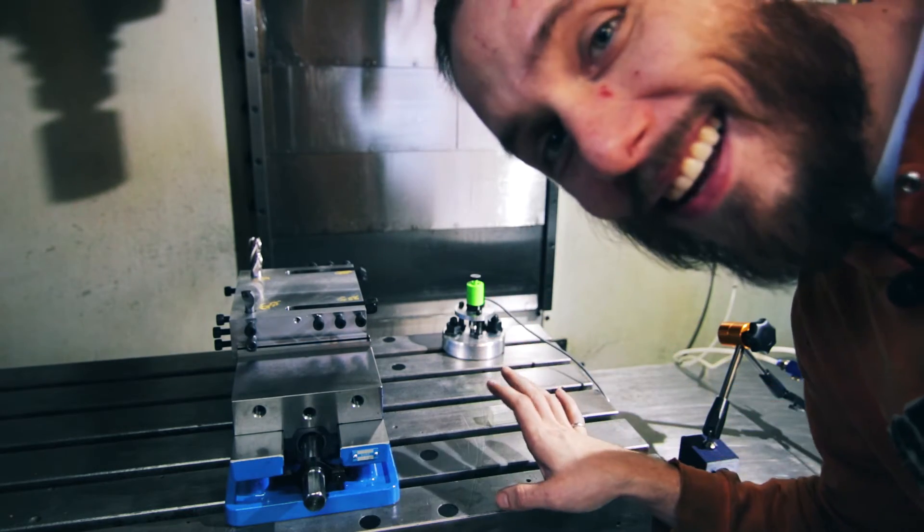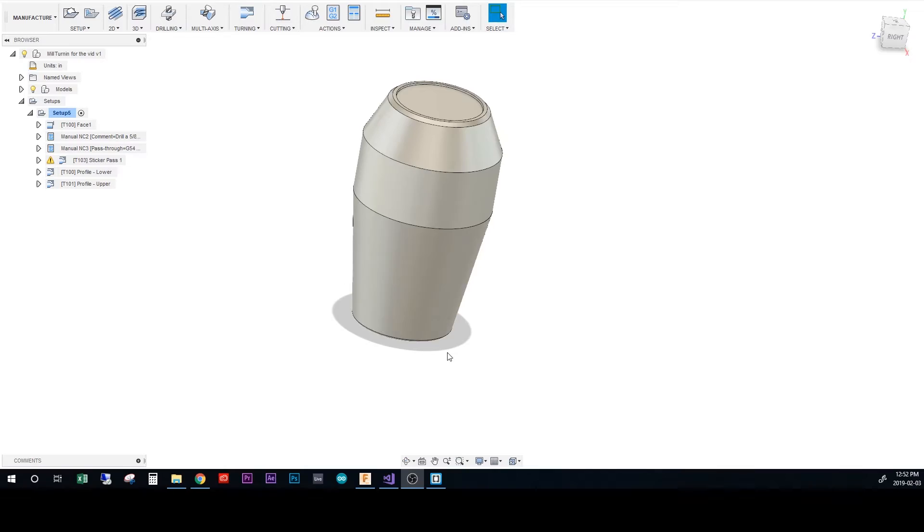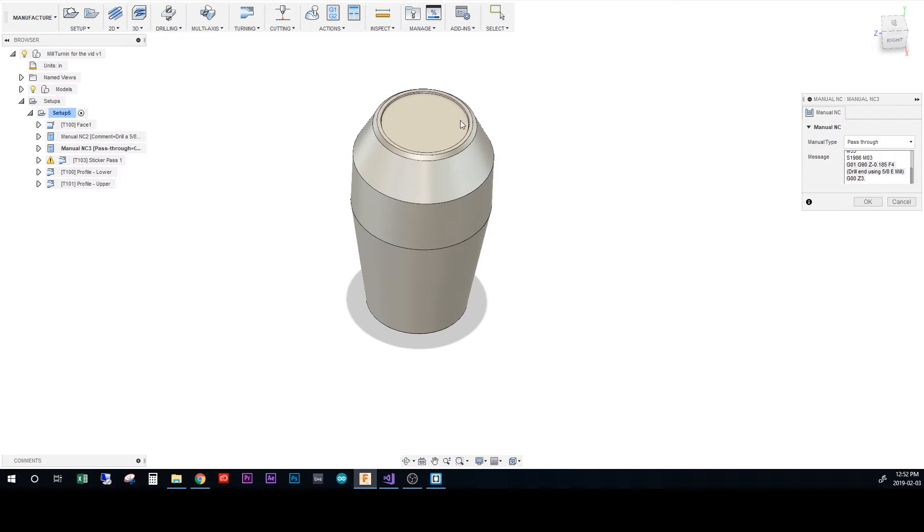So that takes care of telling the machine where everything is, and then it just comes down to the Fusion stuff which I'm going to show you right now. This is the piece that I'm trying to make. The first thing that I do is a pass-through command telling it the workpiece is in tool slot number one. I then spin up the spindle to around 2000 RPM.